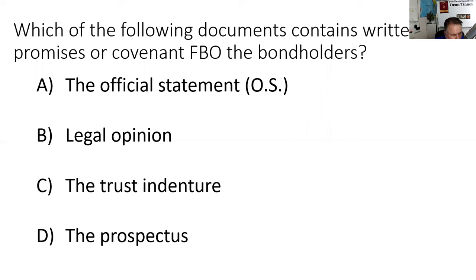Bond counsel opines on: the legislative authority to borrow the money; if it's a GO, that there was a proper vote; that the interest they pay is federally tax-exempt; and that these are exempt from the Securities Act of 1933. They give either an unqualified opinion without reservations — which is better — or a qualified opinion with reservations.